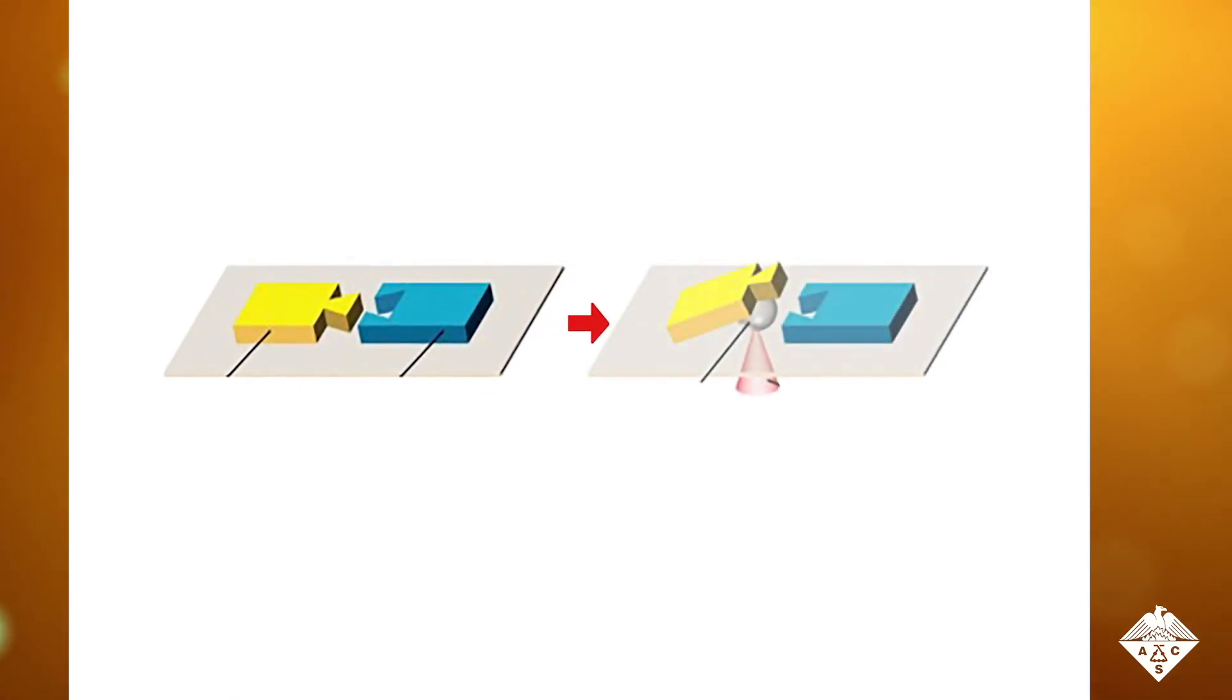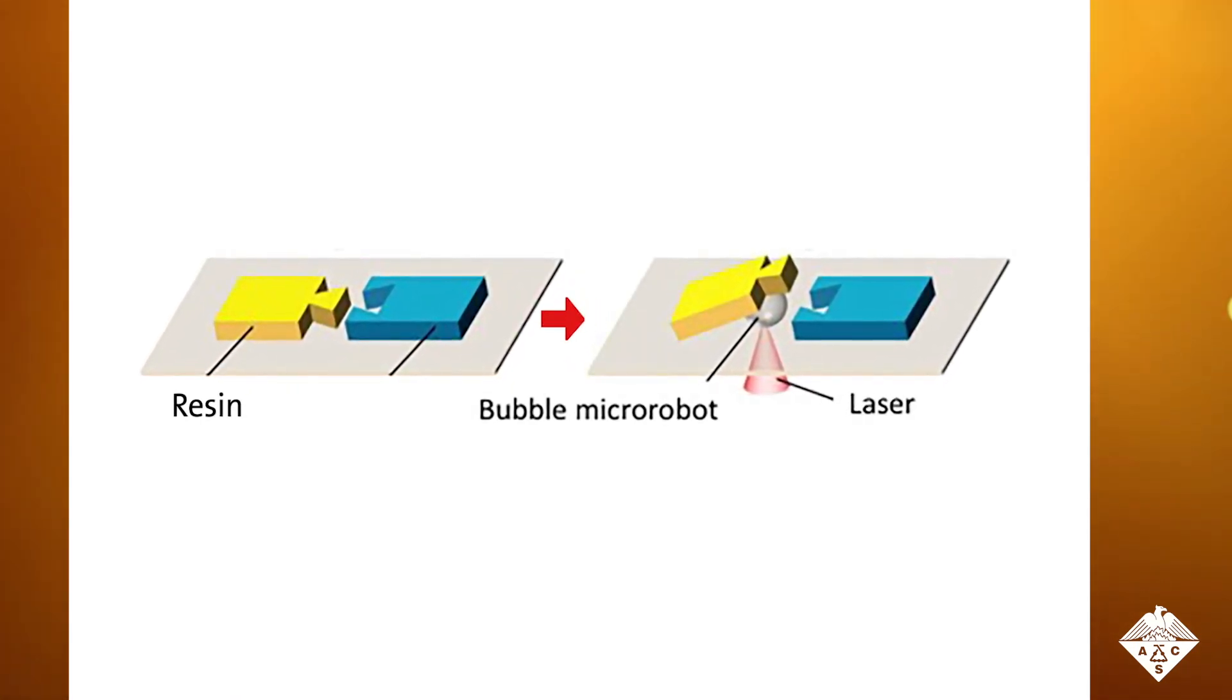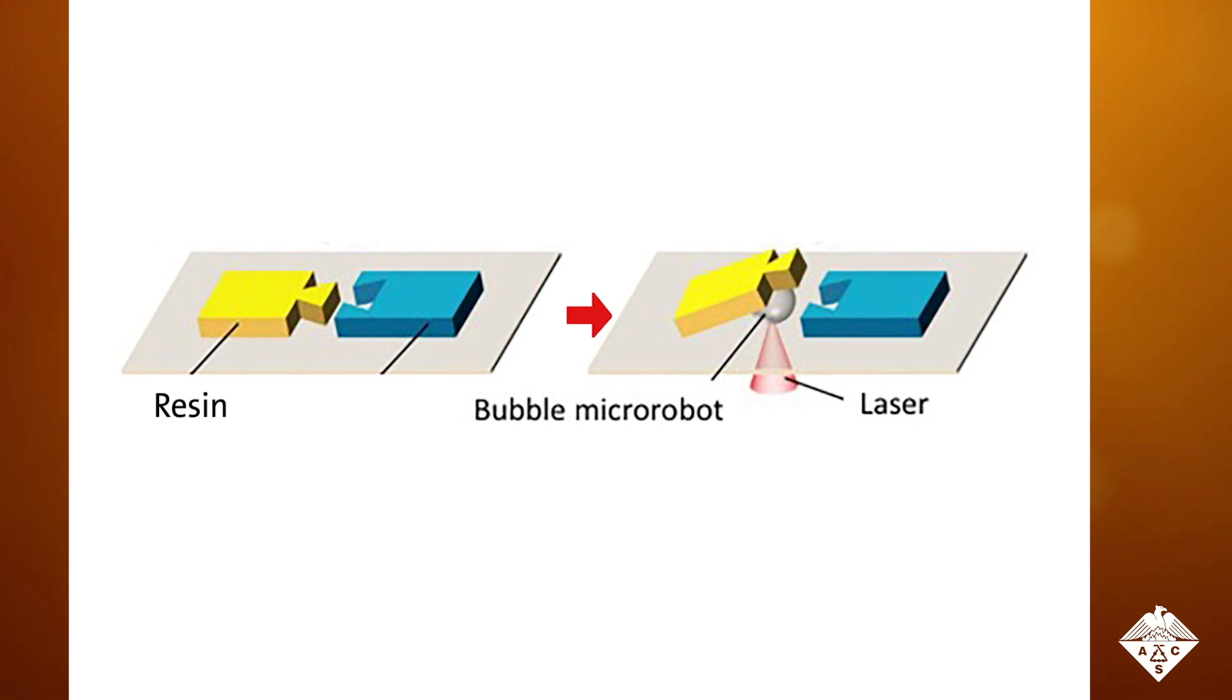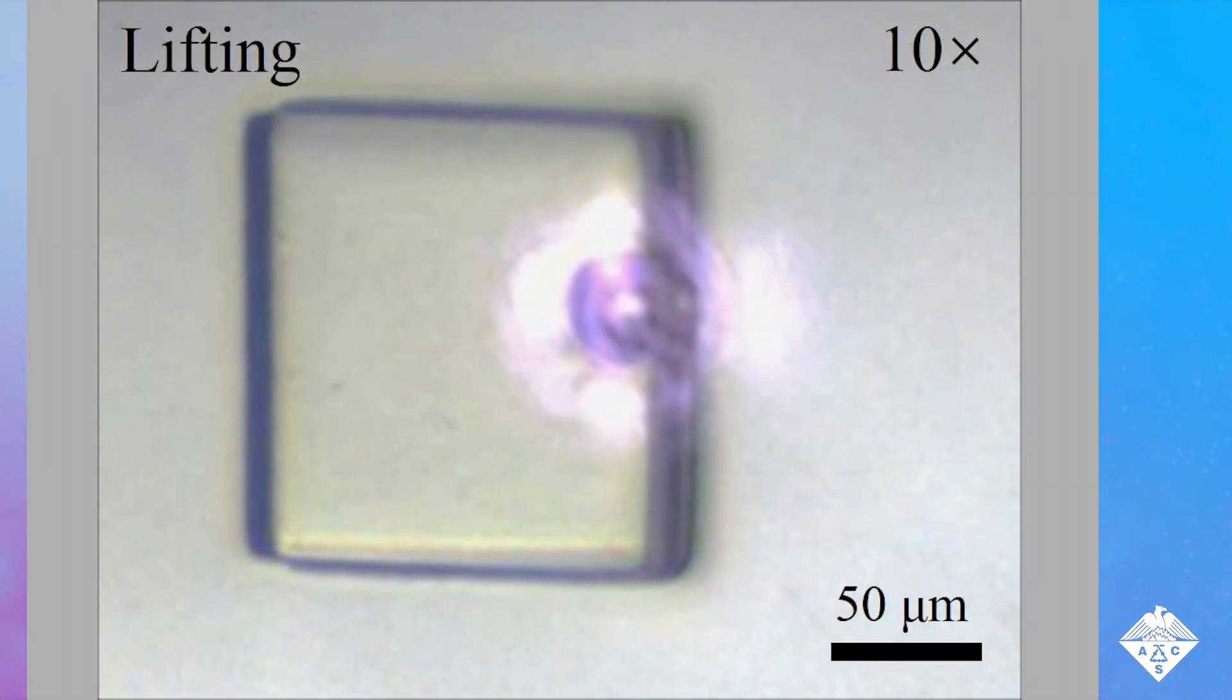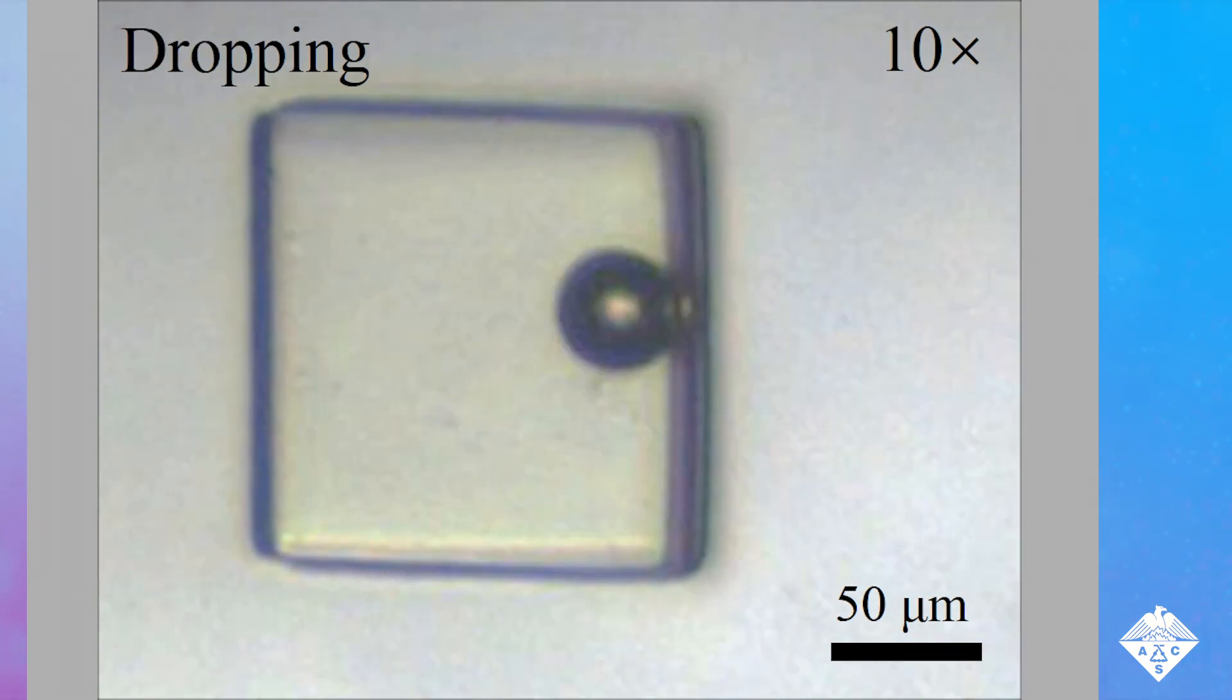The researchers created microbubbles in water by focusing a laser underneath a small piece of resin. The bubble's size was controlled by rapidly switching the laser on and off, with more time in the on position resulting in larger bubbles. Once the laser turned off, the bubbles dissolved slowly, dropping the resin in place.